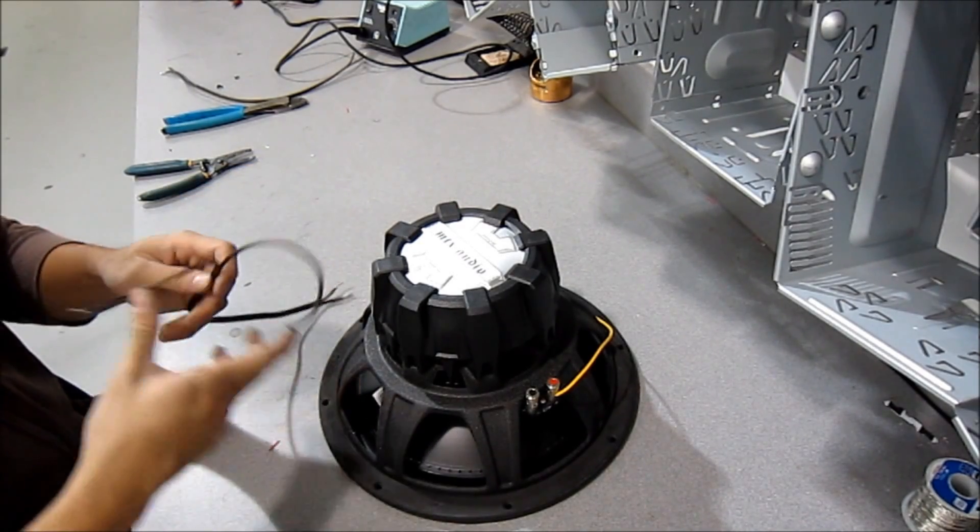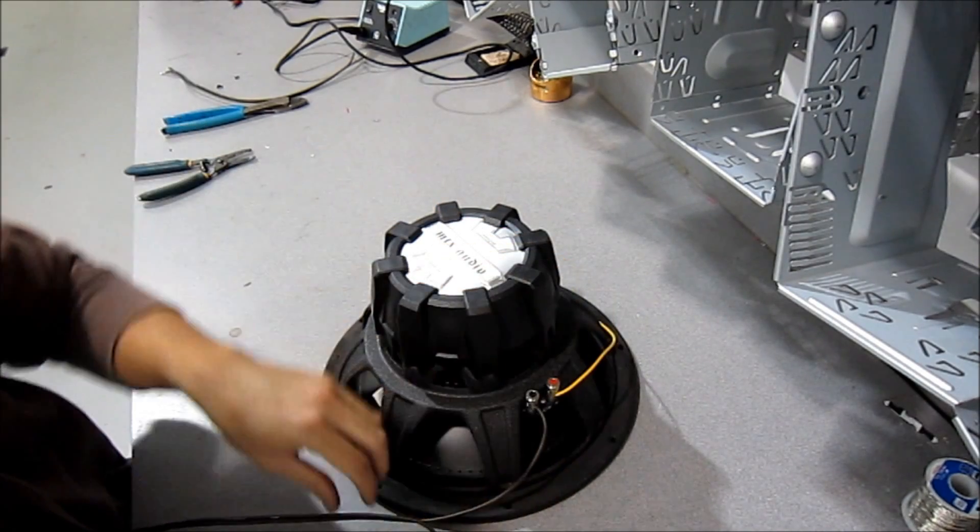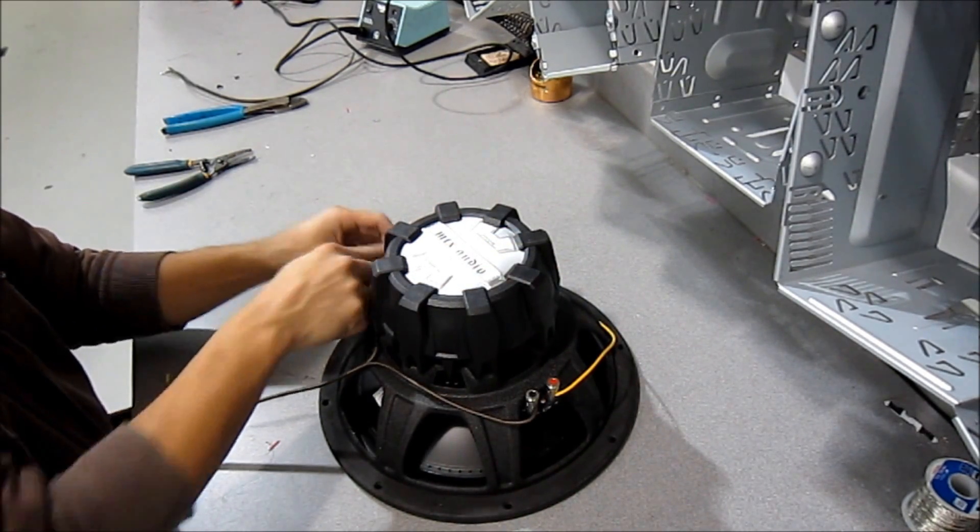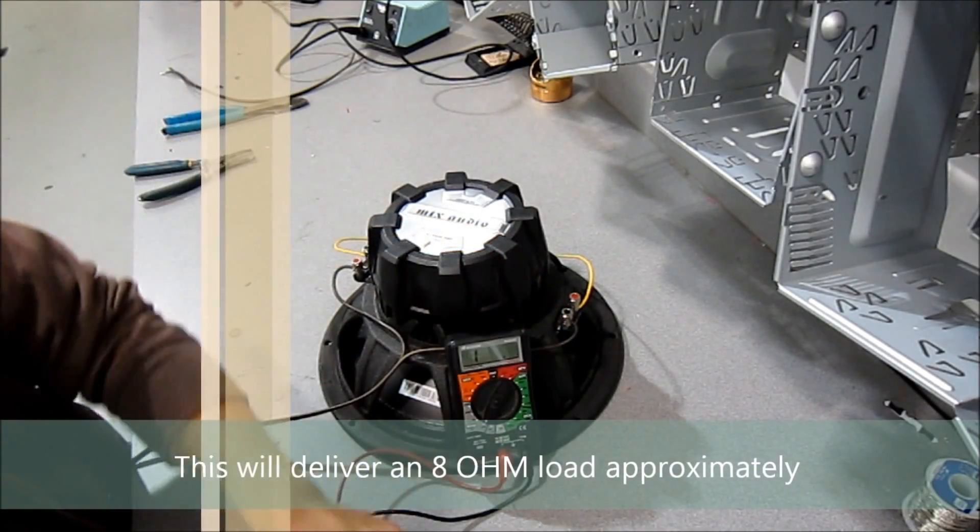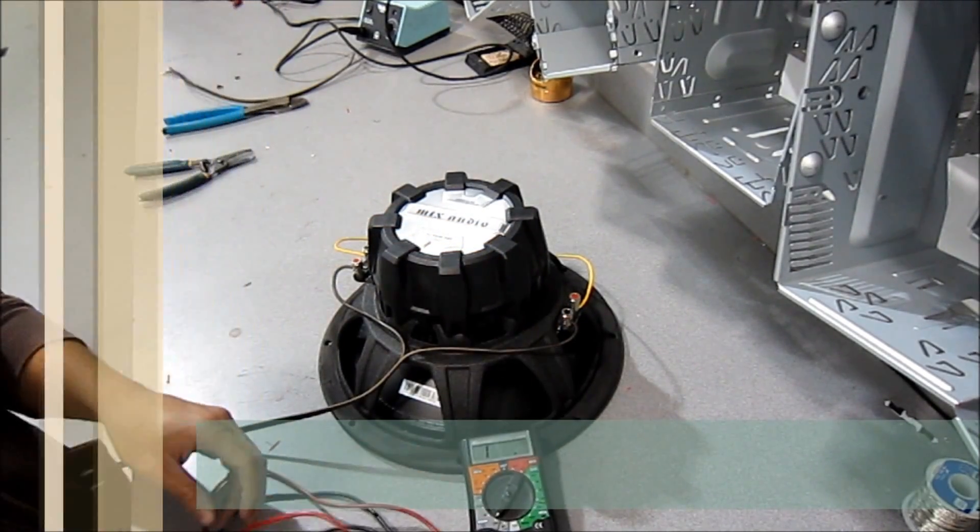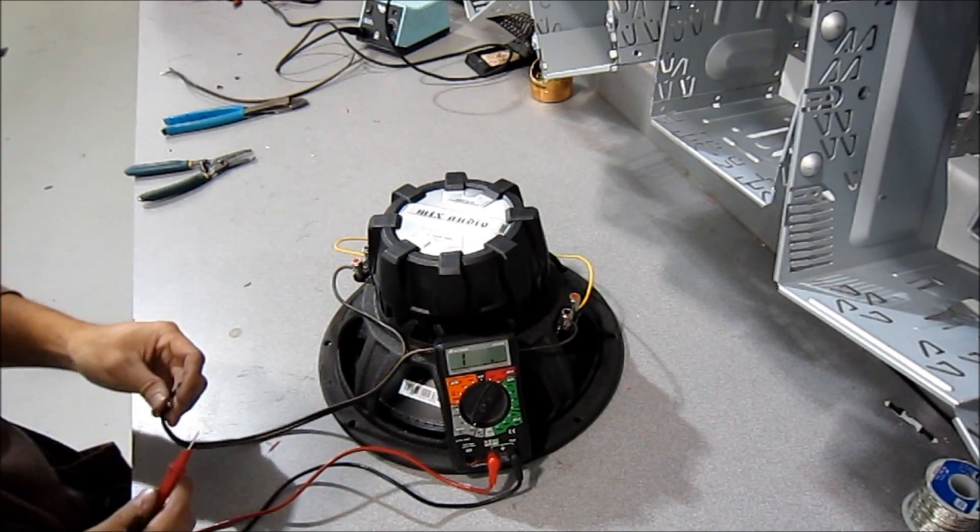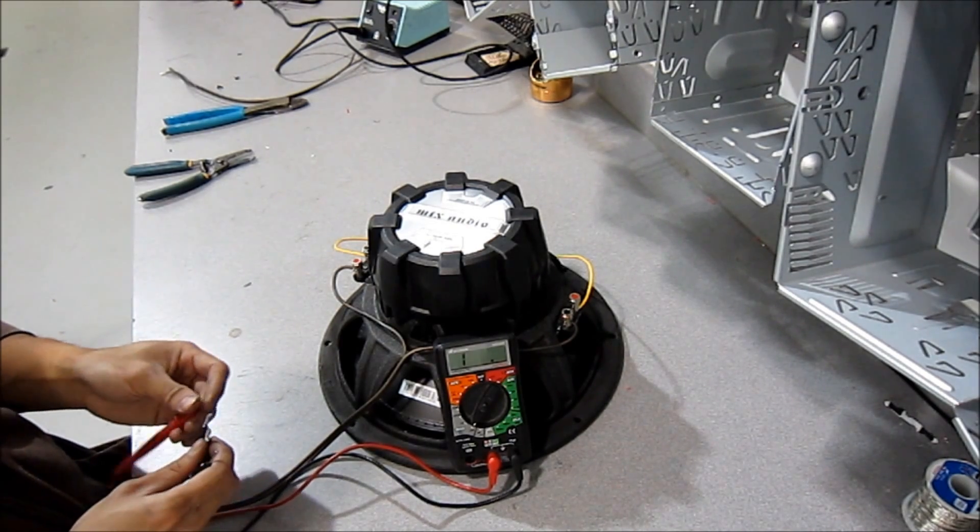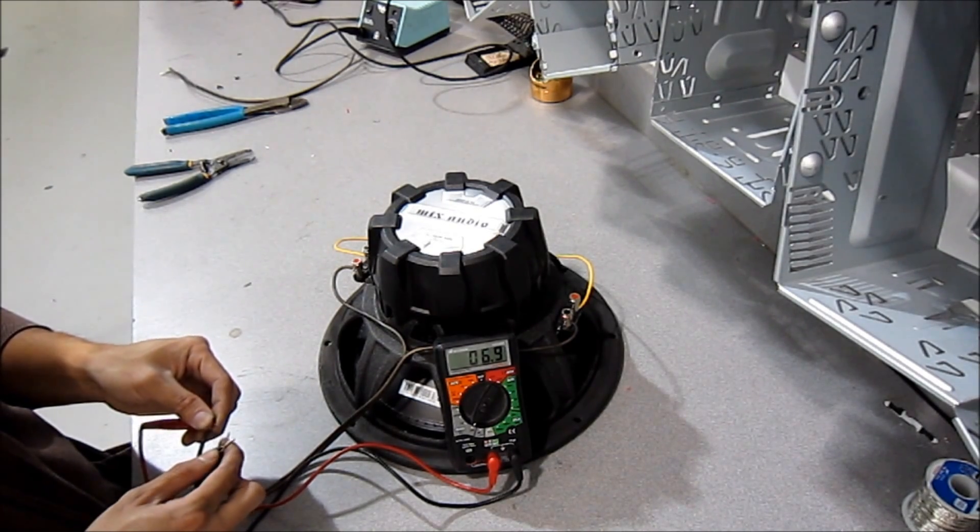And then I'm going to hook up the other end of it to the negative. And then on my pair of wires, one end is going to go into the negative and the other end will go into the positive. Now you're wired up in series. Let's show you a test. It's around 7 ohms.